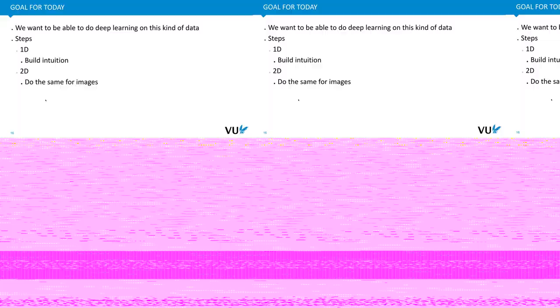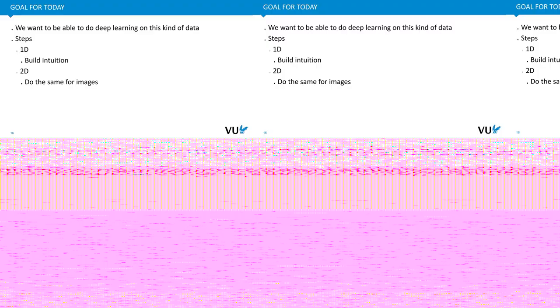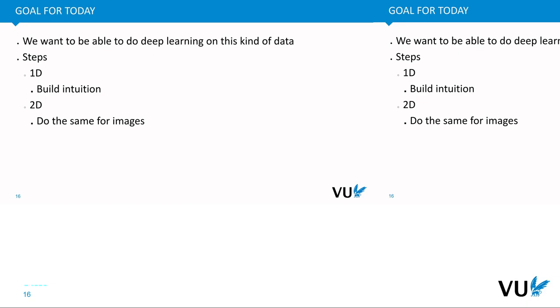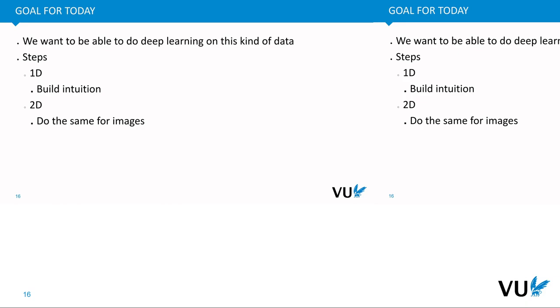So we have seen that while we know how to represent an image in memory and encode it digitally, the standard MLP is not suitable — it does not scale and will not work. What we are going to do instead is enable deep learning for this kind of data using convolutional neural networks. We will first build intuition in 1D, then formalize the concept, then move to 2D, and finally extend to higher dimensions such as images.